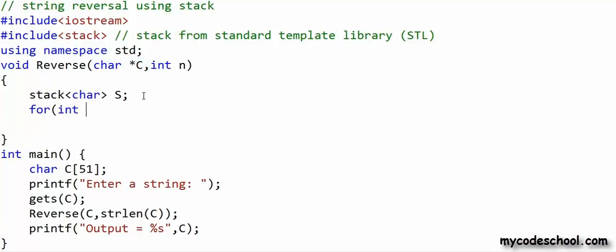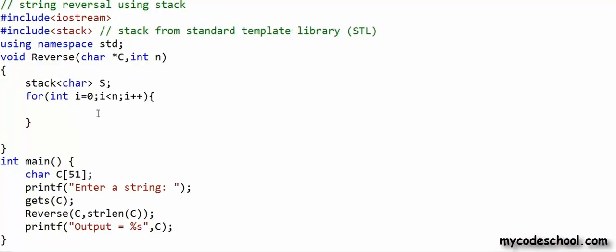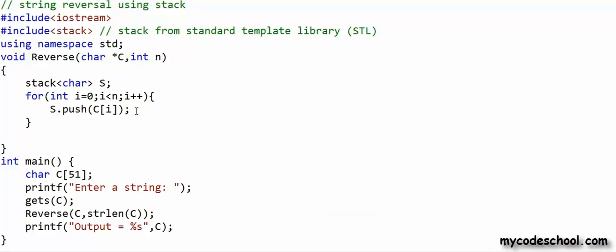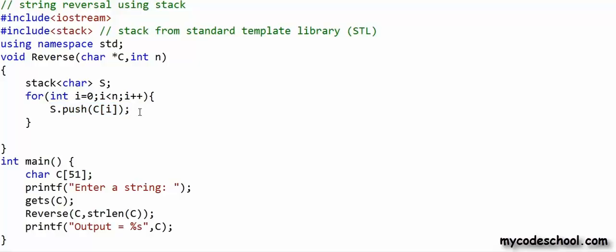Now what I'm going to do is run a loop starting 0 till n minus 1. So I will traverse the string from left to right and as I traverse, I will push the character onto stack by calling push function. I will use a statement like this.